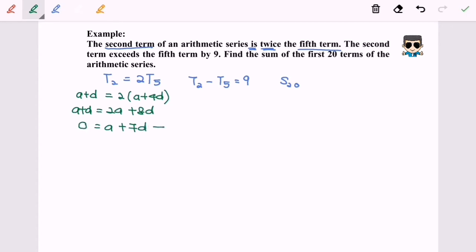For the second equation, we have T2 minus T5 equals 9, so a plus d minus...